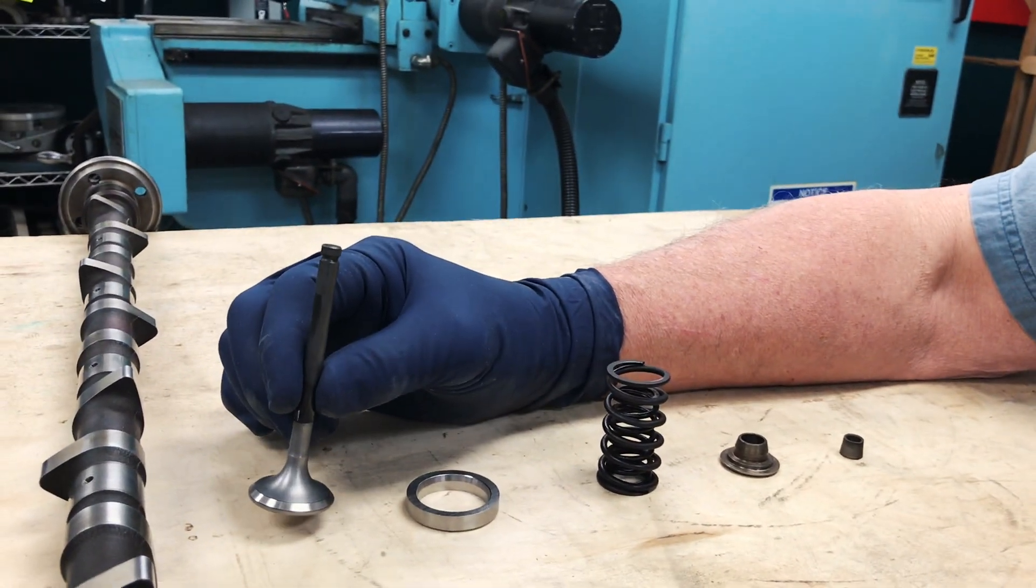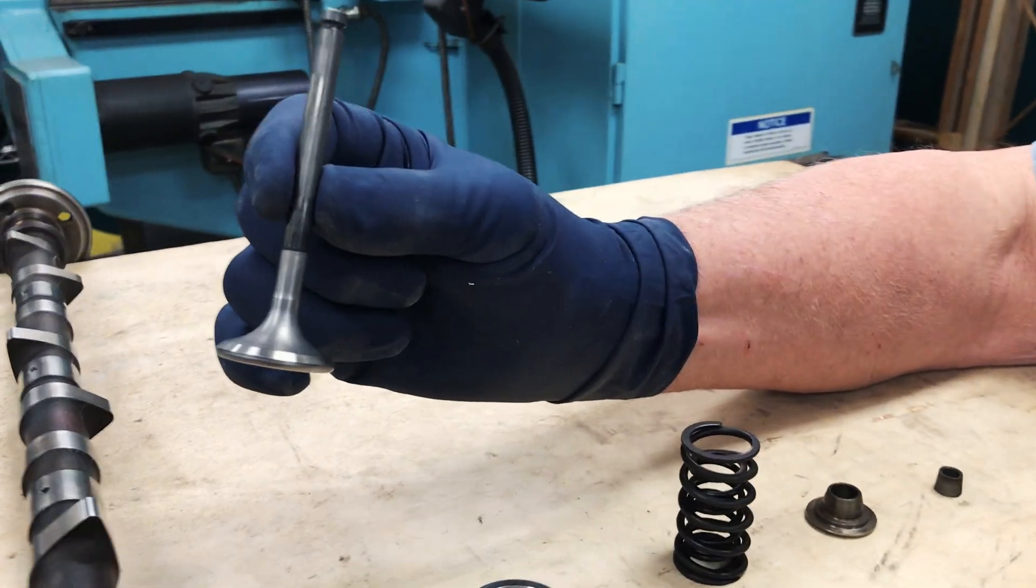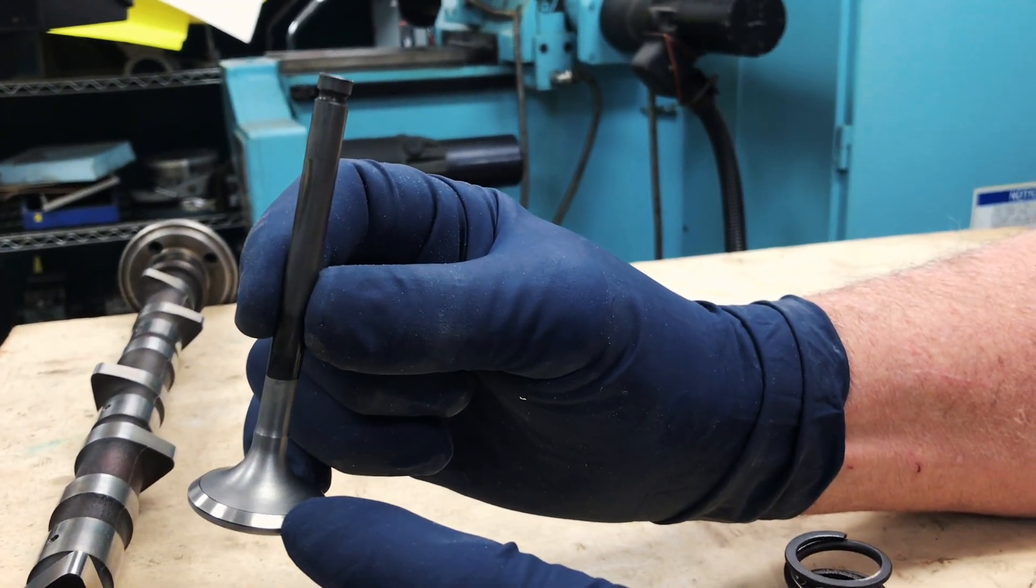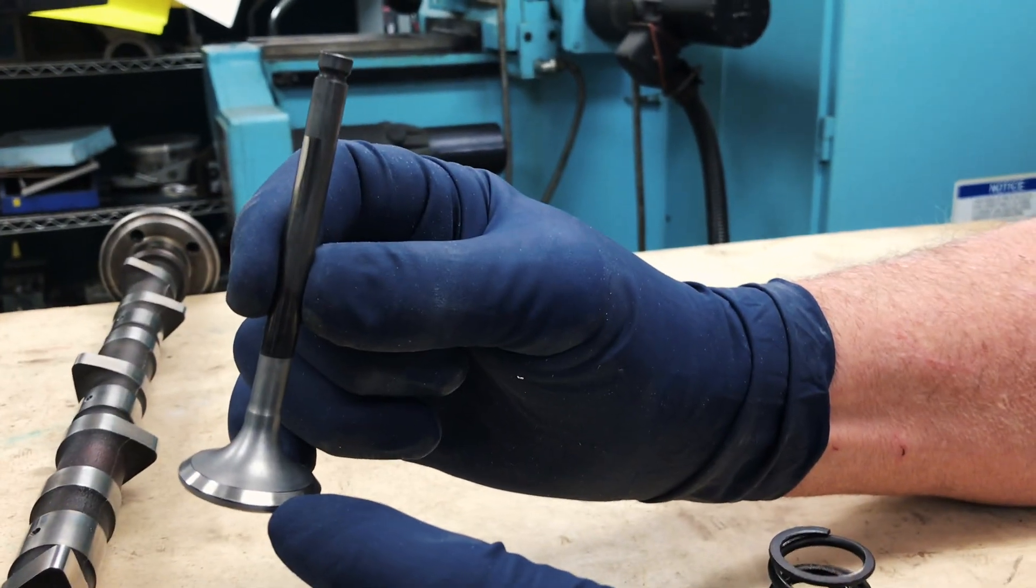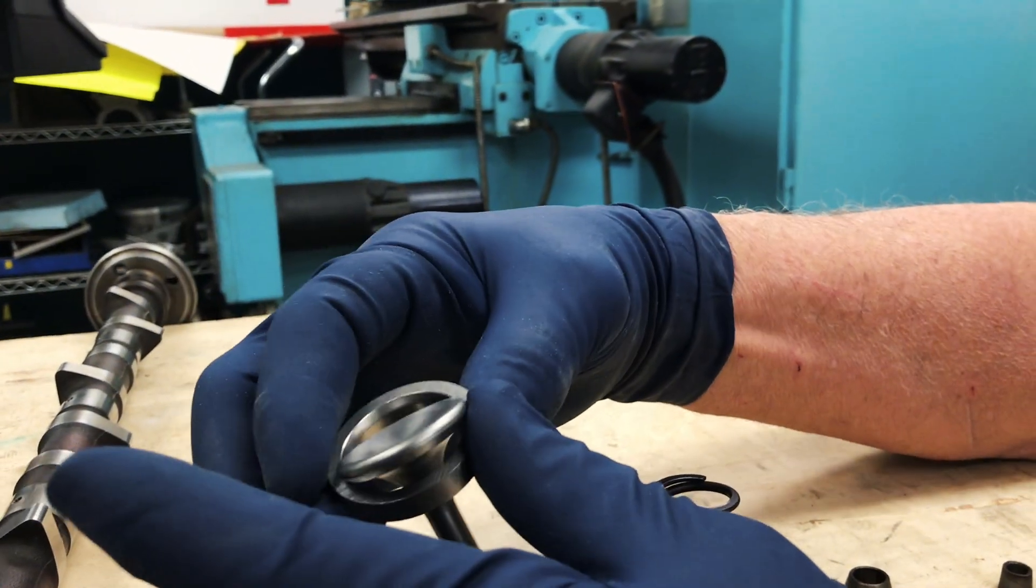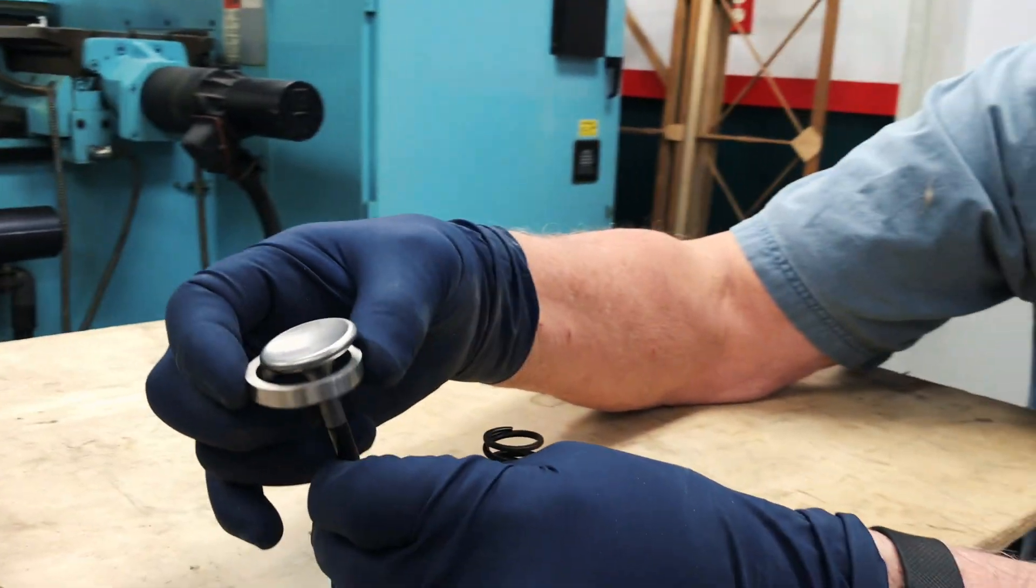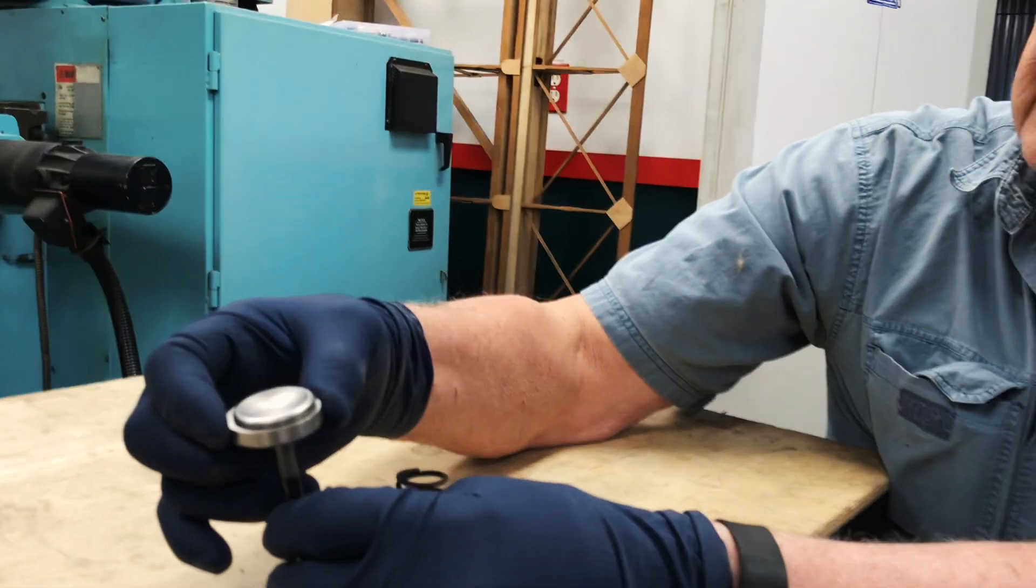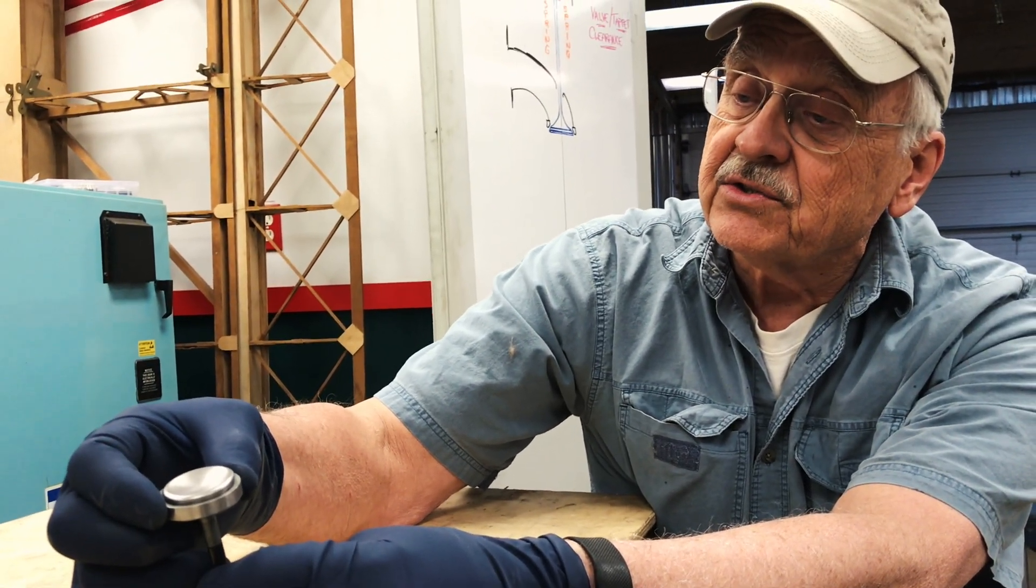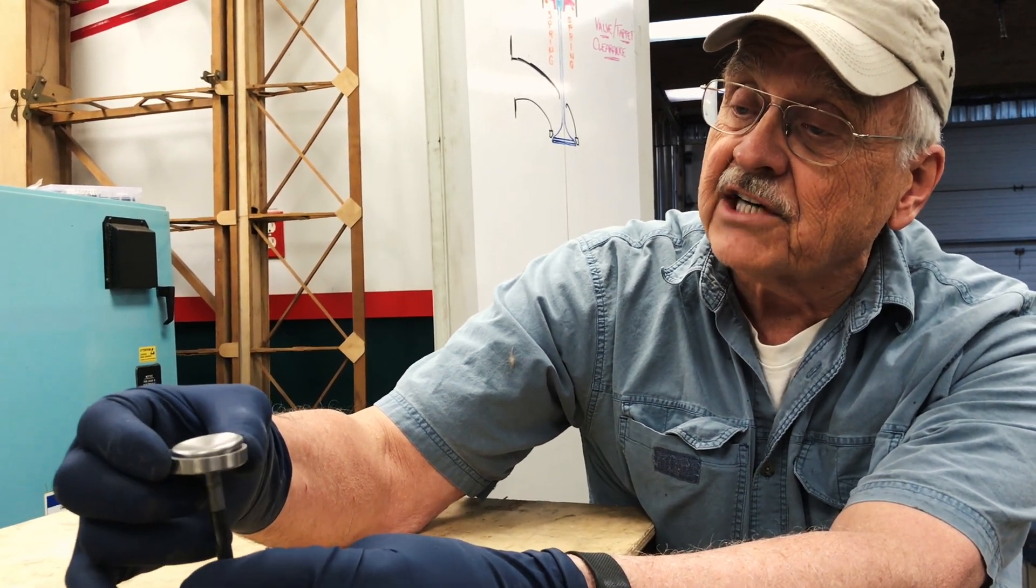You've got an exhaust valve, which is what this one is right here, and an intake valve in each cylinder. The valve consists of a stem—this long skinny part right here—and you can see there is a very finely ground surface on the bottom side. This actually fits into this seat. The valve opens and closes, in this case to allow exhaust gas out and then to seal the combustion chamber.